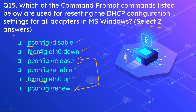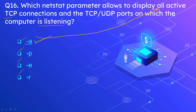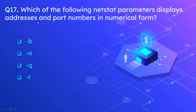Question 16: Which netstat parameter allows you to display all active TCP connections and the TCP/UDP ports on which the computer is listening? The options are -a, -p, -e, and -r. The correct answer is -a — A stands for all active TCP connections and all TCP/UDP ports. Question 17: Which netstat parameter displays address and port numbers in numerical form? The options are -b, -n, -q, and -r. The correct answer is -n — N stands for numerical.